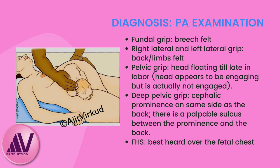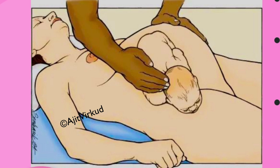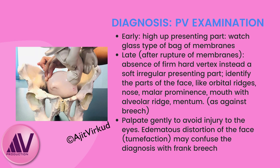Coming to clinical diagnosis, findings on Leopold grips are: fundal grip — breech felt; right lateral and left lateral grip — back and limbs felt on either side. On pelvic grip, head is floating till late in labor; head appears to be engaging but is actually not engaged. On deep pelvic grip, cephalic prominence is on the same side as the back, and there is a palpable sulcus between the prominence and the back. Fetal heart sounds are best heard over the fetal chest.